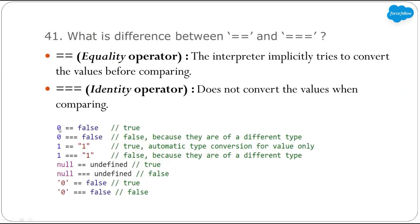So with double equals, the data type of the variable doesn't matter. With triple equals, data type does matter. For example: 0 == false returns true because technically zero is also false. But 0 === false returns false because zero is an integer and false is a boolean. Similarly, 1 == '1' returns true because data type is auto-converted, but 1 === '1' is false. In short: use double equals when comparing only values without caring about data type, else use triple equals.